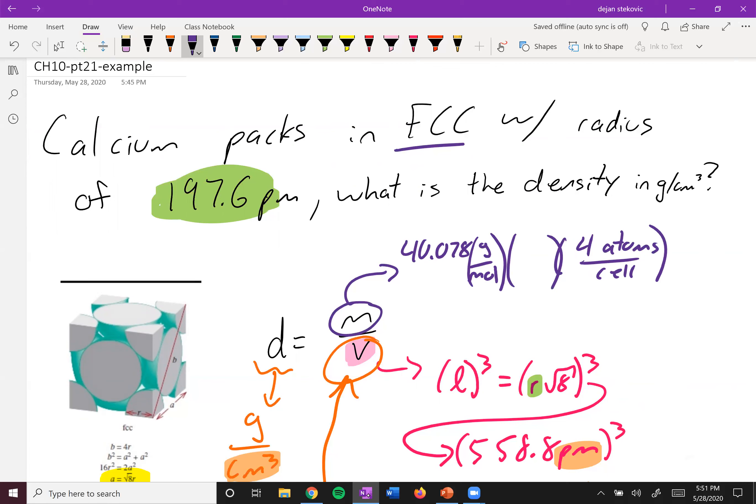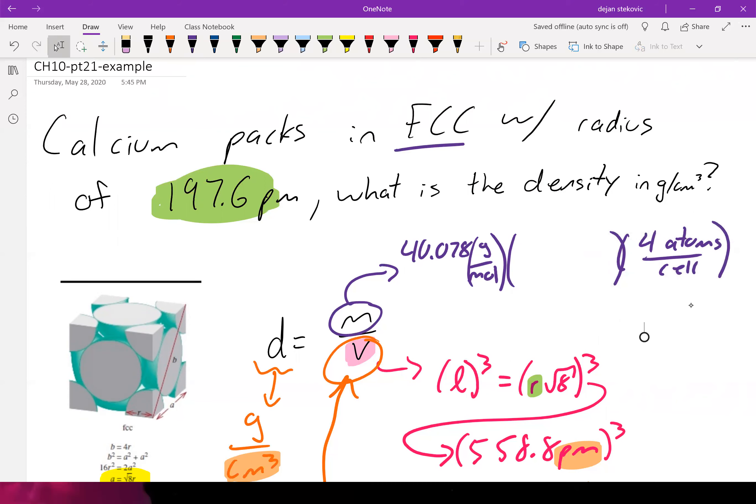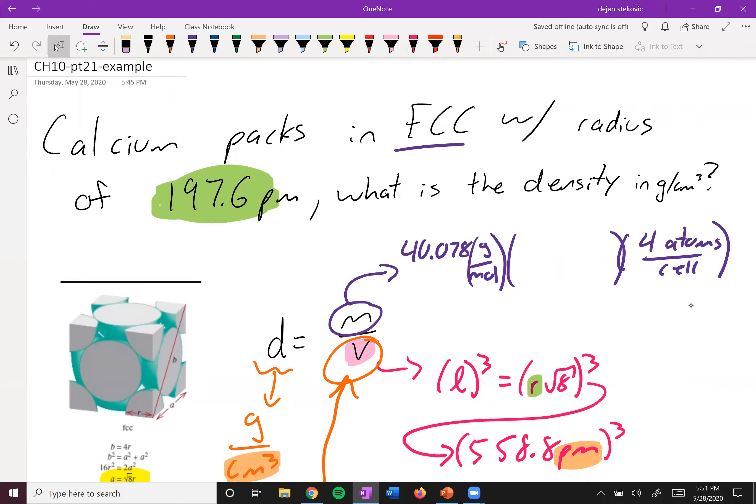But we need to connect these two units, right? Atoms per cell and grams per mole. So what we really need to connect is atoms and moles. And so if you think about what that is, that's Avogadro's number. So what it is, is 6.022 times 10 to the 23 atoms per one mole.